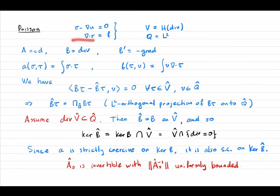The mixed formulation of the Poisson equation introduces a new variable for the gradient of u and rewrites the equation accordingly. The space V is H(div), the space of vector fields whose divergence is in L2, and Q is L2. Comparing to the abstract formulation, the operator A is the identity on V, and the operator B is the divergence mapping H(div) into L2, while B' is minus the gradient.